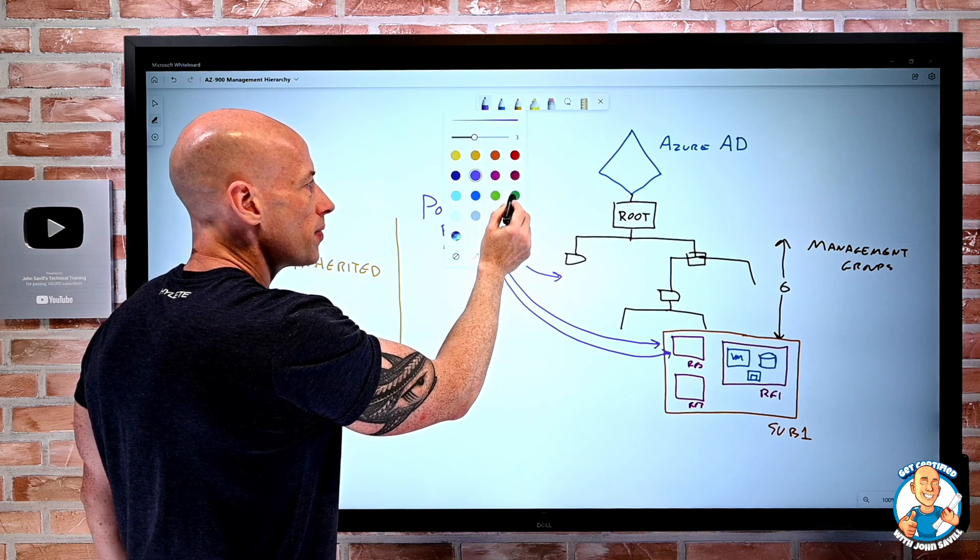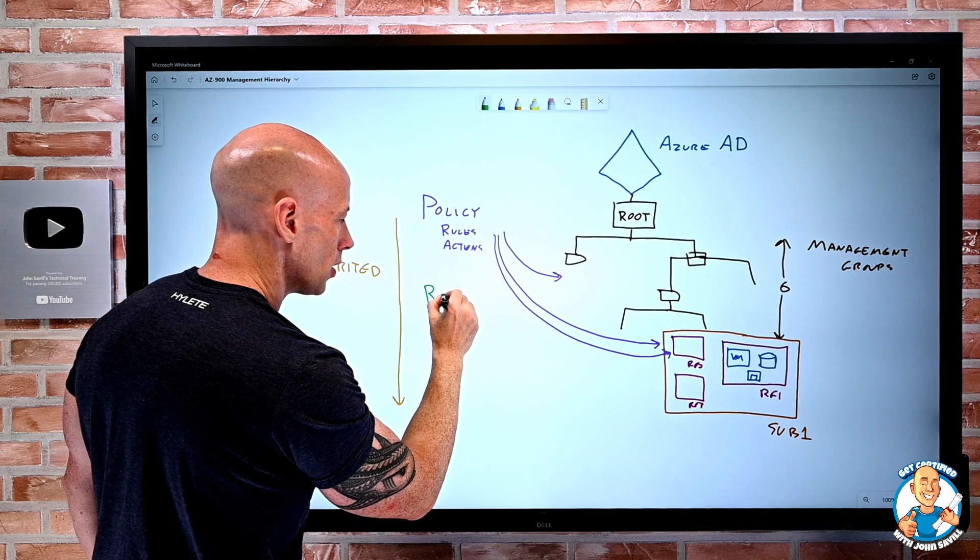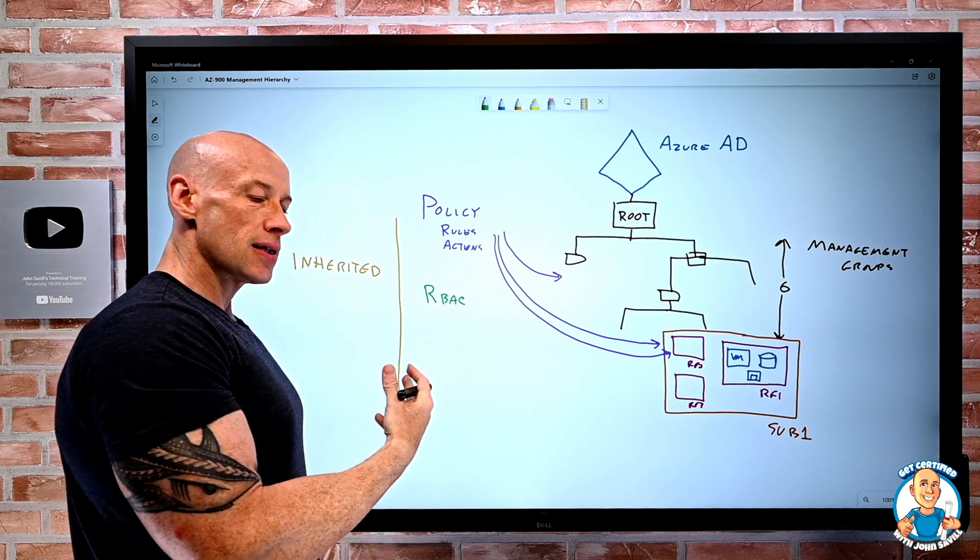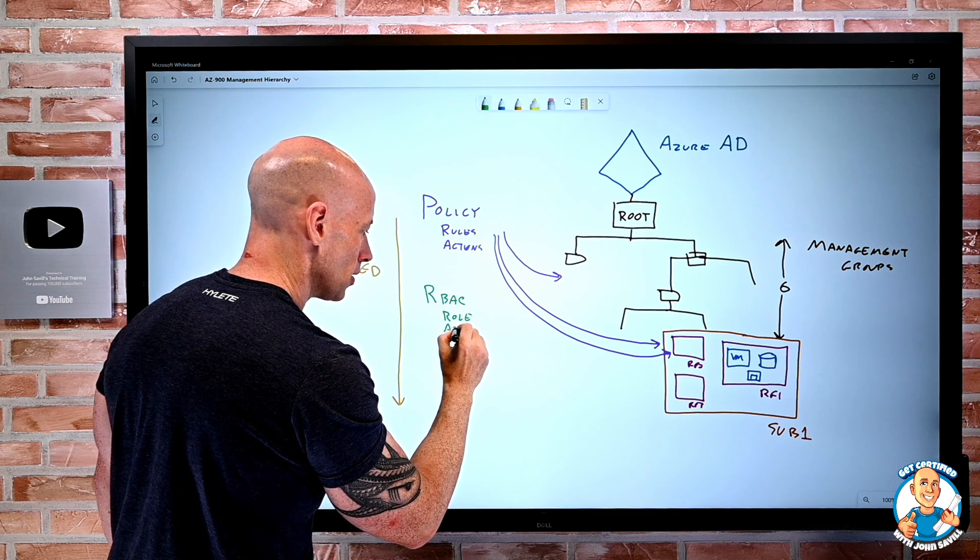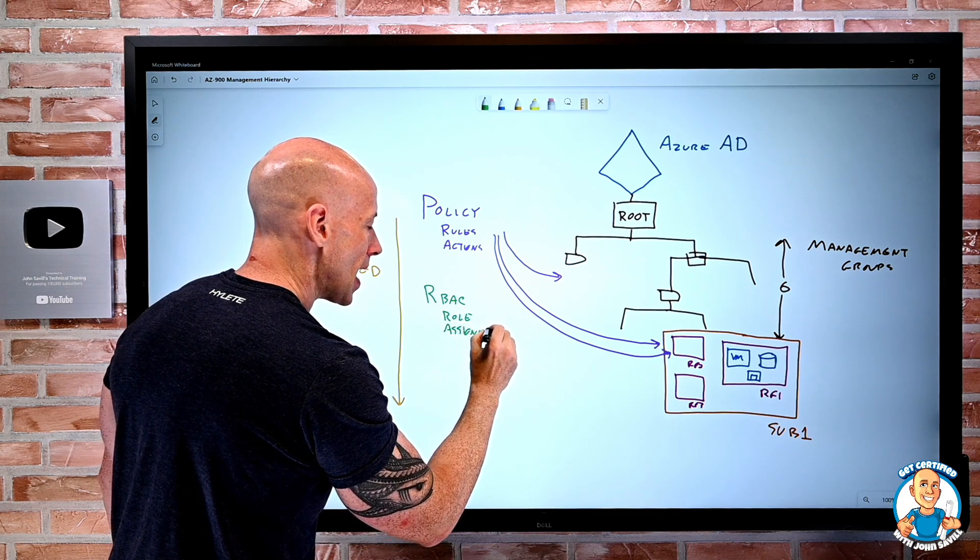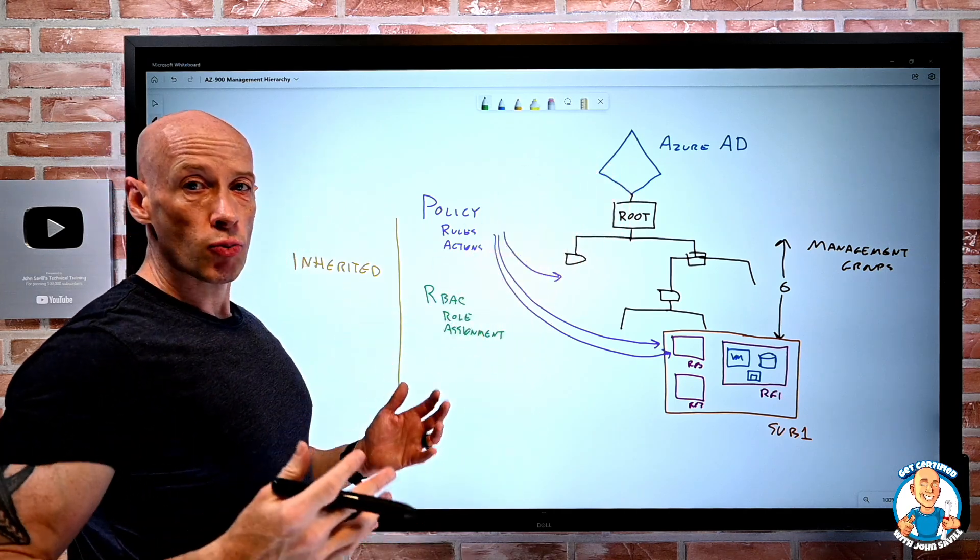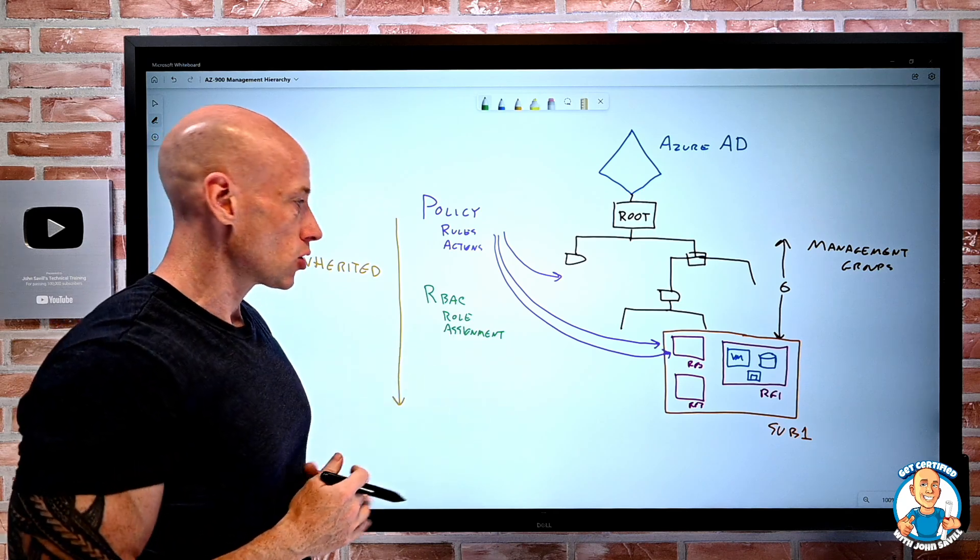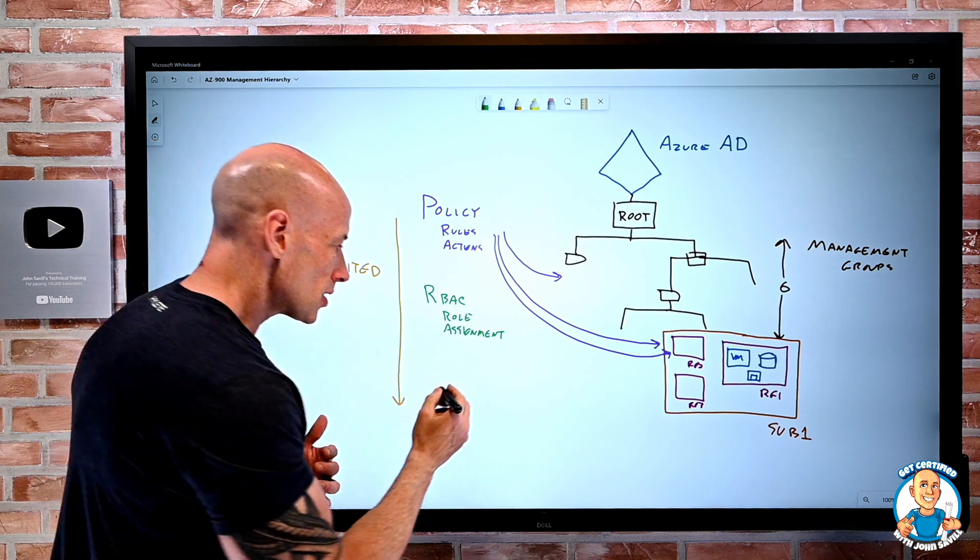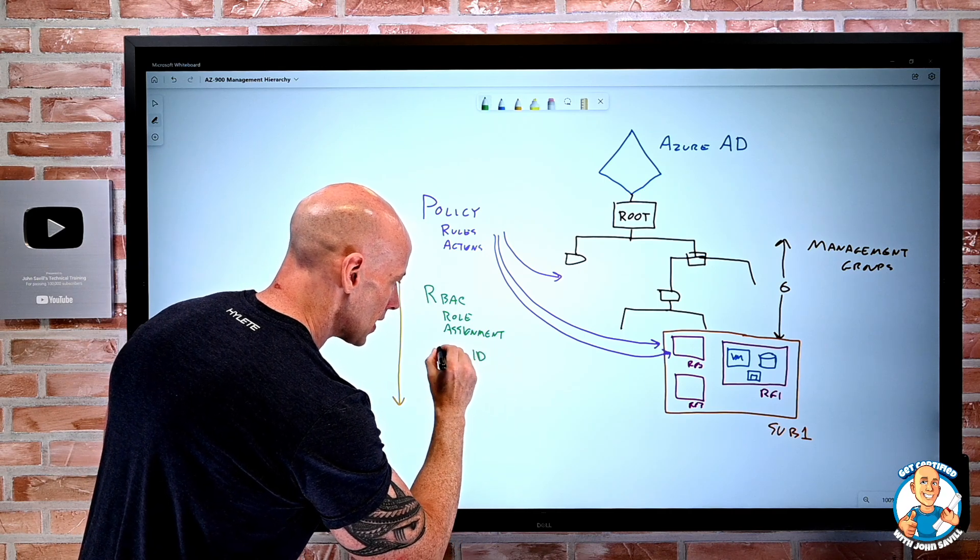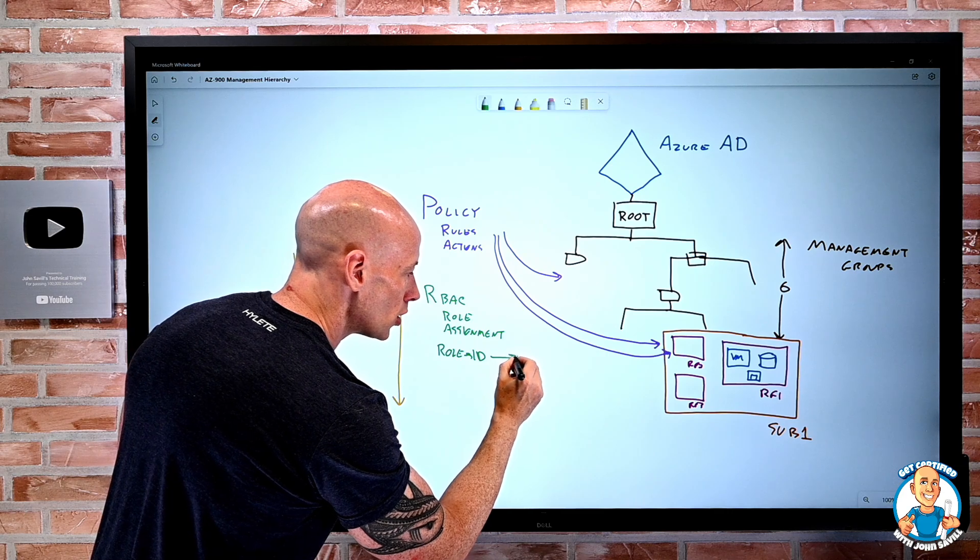Then the next type of thing we can deploy is role-based access control. Role-based access control is about role assignment. A security principle from our Azure AD, user group, service principle, managed identity for an Azure resource, gets assigned a certain role. So I have an identity is given a role at a certain scope.